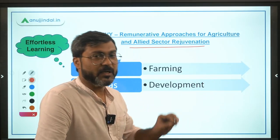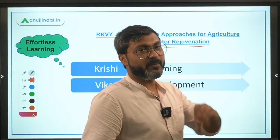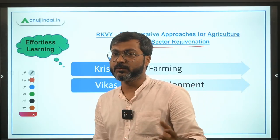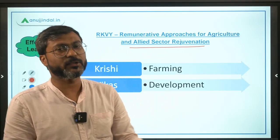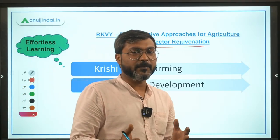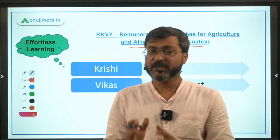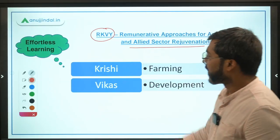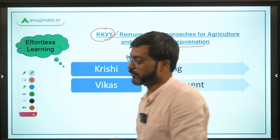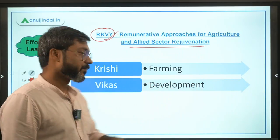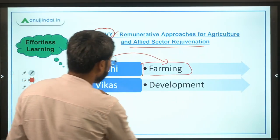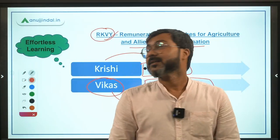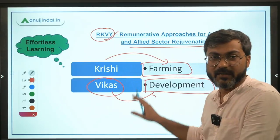If you can remember the full form of RAFTAR, it is very easy to identify the objective. If not, you should know the initial name of the scheme — it was Rashtriya Krishi Vikas Yojana, RKVY. Krishi means farming and Vikas means development, so the scheme is about development in the farming sector.